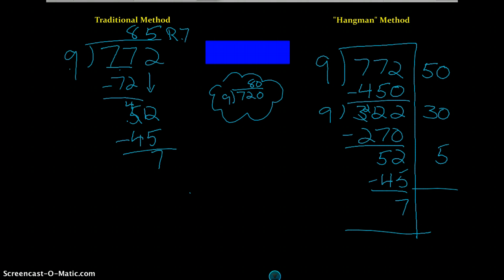Now to get the answer, what you do is you just take these numbers over here on this side of the board, and you add them up. So 50 plus 30 plus 5, well, that would be 85. And so your total answer would be 85 with that remainder of 7 right there. And that's how you do the hangman method.